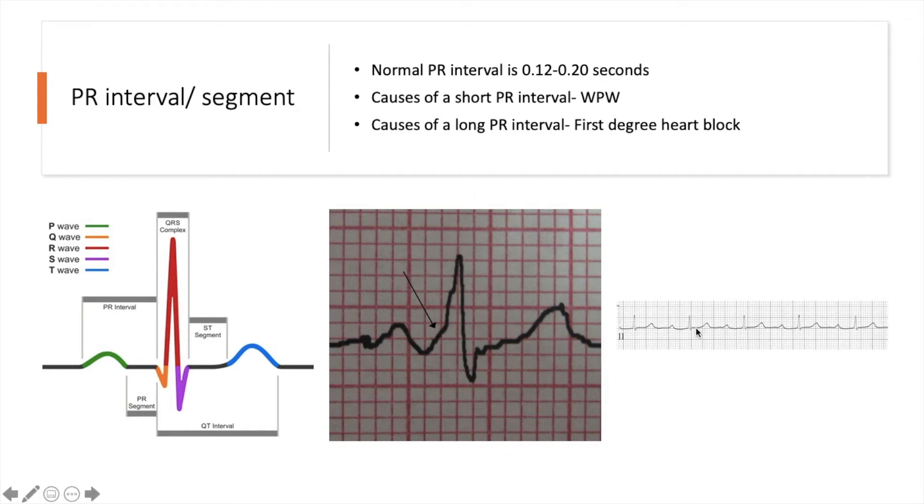On the opposite end of the spectrum, we have a long PR interval. And this is in a condition called first degree heart block. Again, this is just to introduce the topic. But you can see if you start from here and finish here, that's definitely longer, definitely bigger than one large square. So this is abnormal.